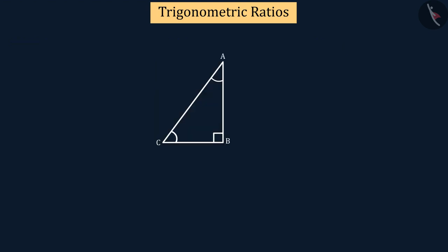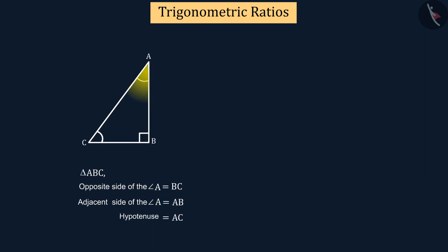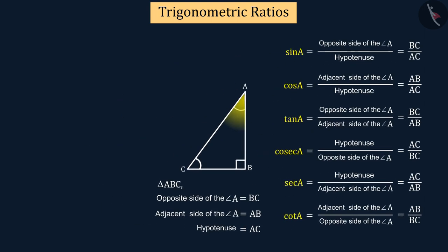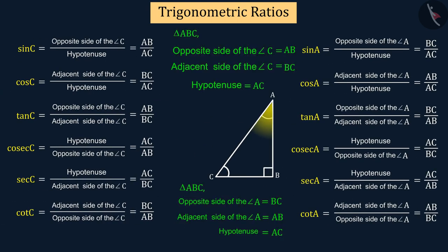Can you now write trigonometric ratios for angle A? Yes, the trigonometric ratios with respect to angle A will be as follows. You can see here that the opposite and adjacent sides change for angle A and angle C.